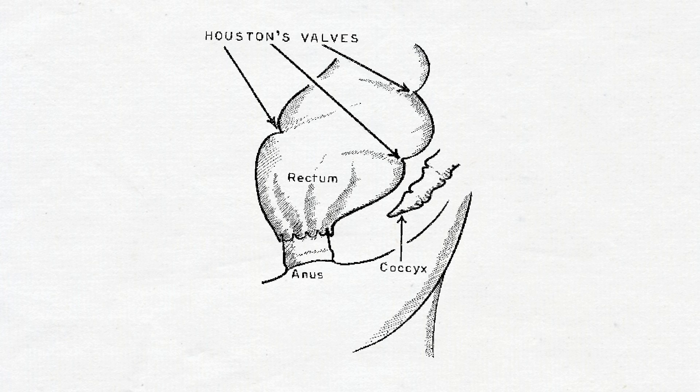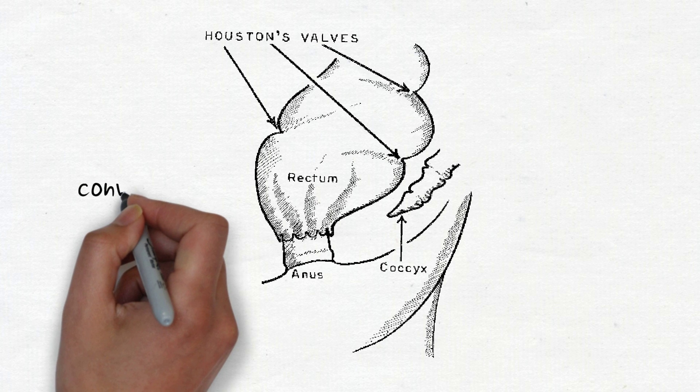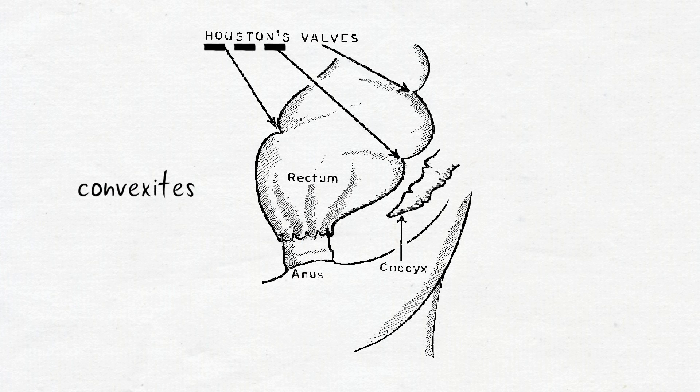Let's see the Waldeyer fascia. Rectum is never straight in the adult. It has one convexity on the left and two convexities on the right. Three valves of Houston.